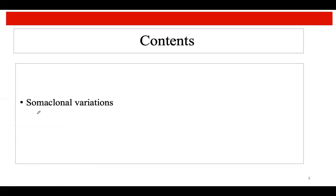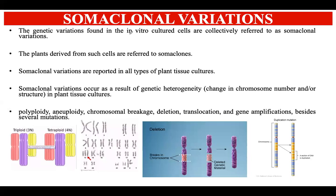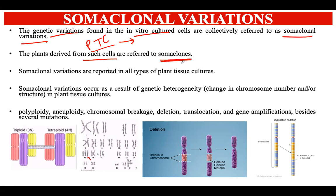In this lecture we are going to talk about somaclonal variations happening in plant systems. Somaclonal variations are the genetic variations happening in somatic cells when you're trying to produce clones of plant cells. When doing plant tissue culture using an artificial medium, growing an explant and then a callus, any kind of genetic variations occurring in those in vitro cultured cells are collectively known as somaclonal variations. Plants derived from such cells are referred to as somaclones.